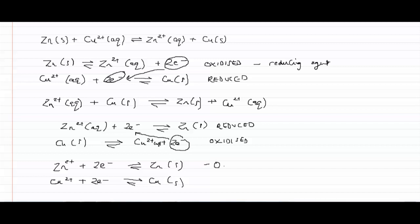And we then look at the reduction potential. The reduction potential is a numerical value. In the case of zinc, it's minus 0.34. In the case of copper, it's plus 0.34.